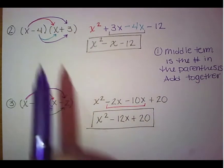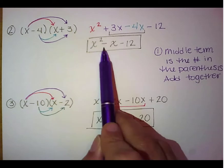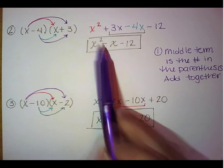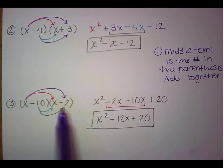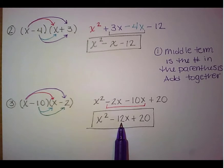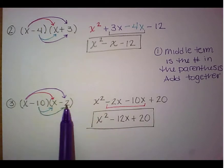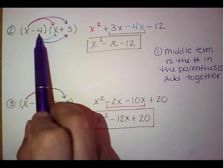Okay, so again if you look at that negative 4 plus 3 gave us negative 1 there in that center. Negative 10 plus negative 2 gave us negative 12. So that middle term we got from adding together the two numbers in our parentheses.